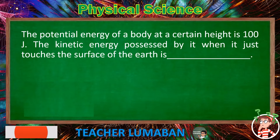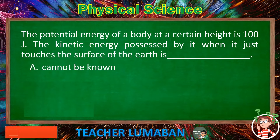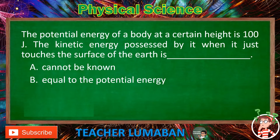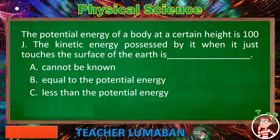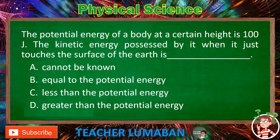The potential energy of a body at a certain height is 100 J. The kinetic energy possessed by it when it just touches the surface of the earth is: Letter A: Cannot be known. Letter B: Equal to the potential energy. Letter C: Less than the potential energy. Letter D: Greater than the potential energy.